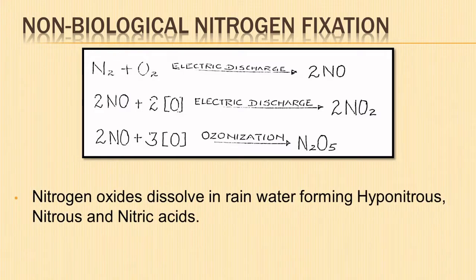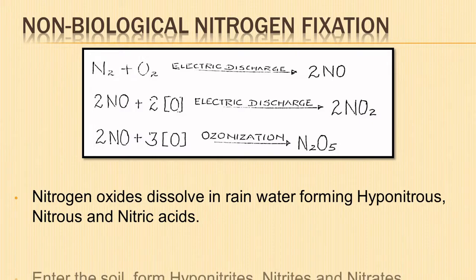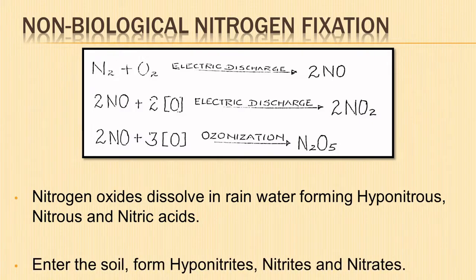These nitrogen oxides get dissolved in rainwater and form hyponitrous, nitrous, and nitric acids. They reach the earth's surface and enter the soil along with rainwater, forming hyponitrides, nitrides, and nitrates, which become available to plants.